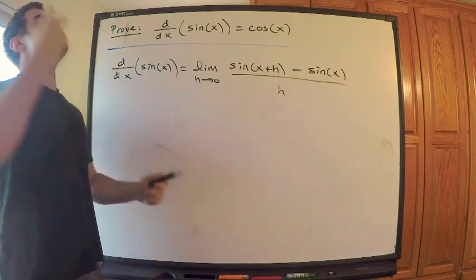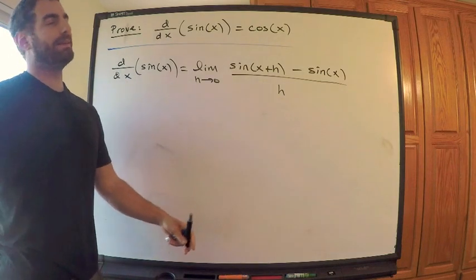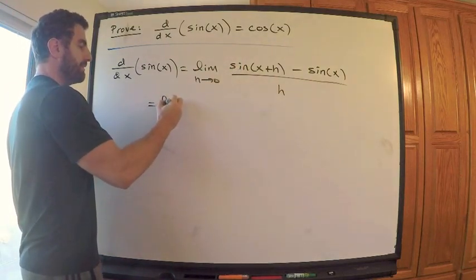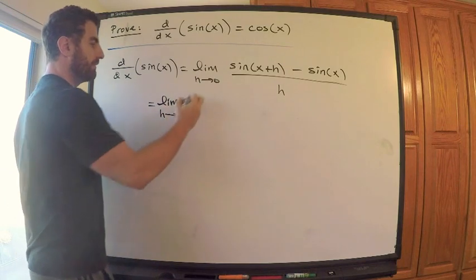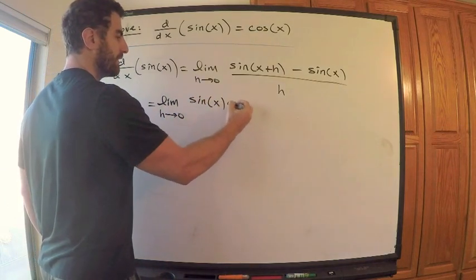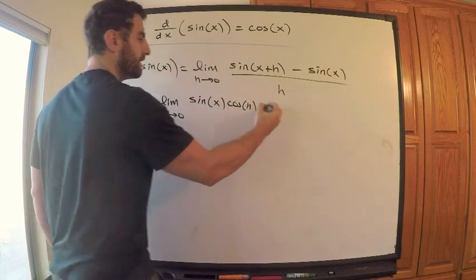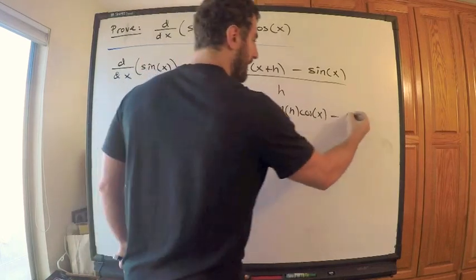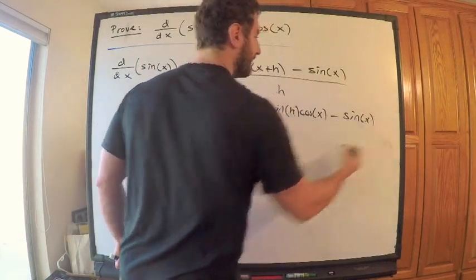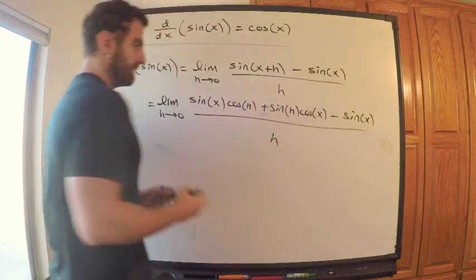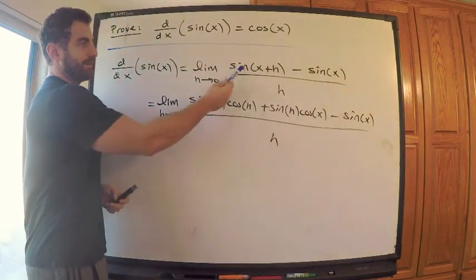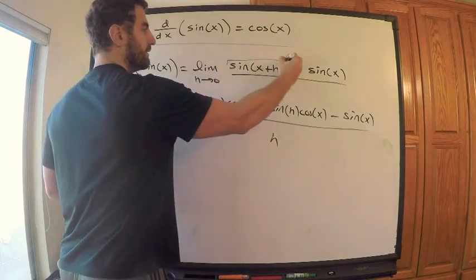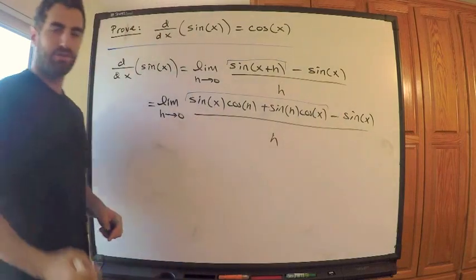Now we have to reach way back and say, damn you trig identities — I need one right here. I need the sum formula. So this is equal to the limit as h tends to 0 of sine of x cosine of h plus sine of h cosine of x, minus sine of x, all over h. Hopefully you see the trig identity — the sum formula: sine of x plus h equals this, using the trig identity.